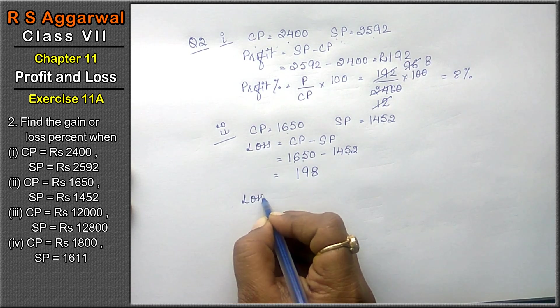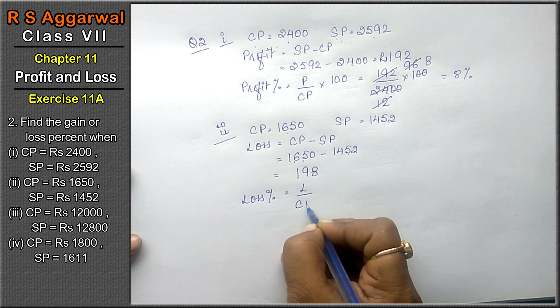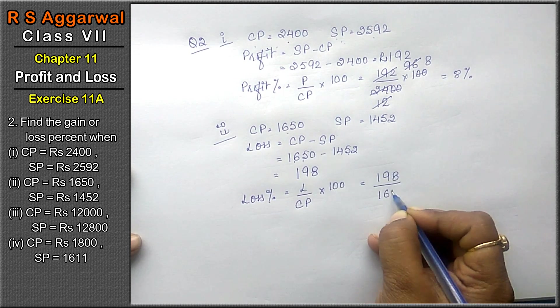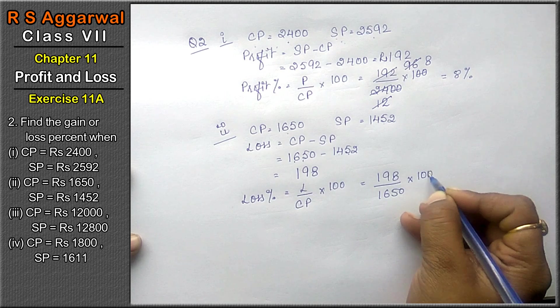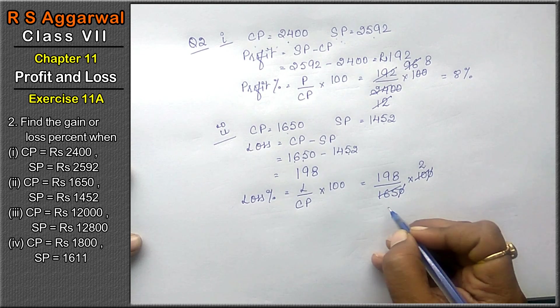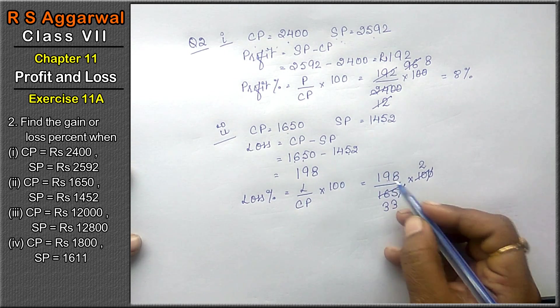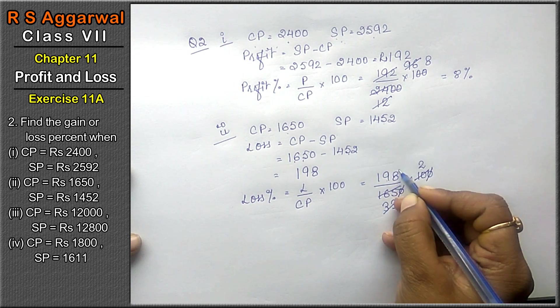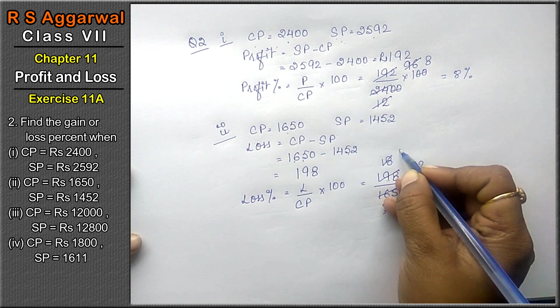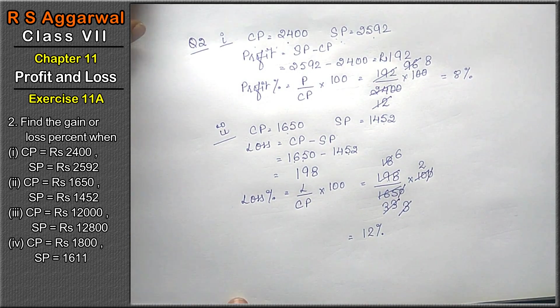Now loss percentage. Loss percentage formula is loss upon CP into 100. Loss is 198, CP was 1650, into 100. Simplifying: 198 upon 1650 into 100. After canceling and calculating, we get 12%. Loss percent is 12%.